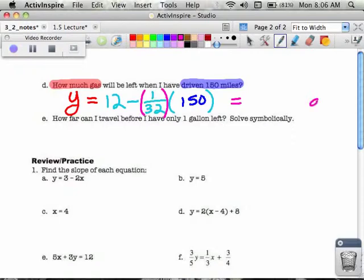And your answer will be in gallons of gas when you're finished. So 12 minus parentheses 1 divided by 32 parentheses times 150. 7.31 gallons to the nearest two decimal places.